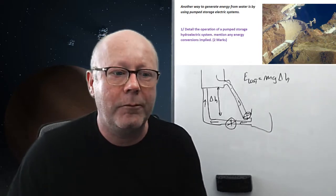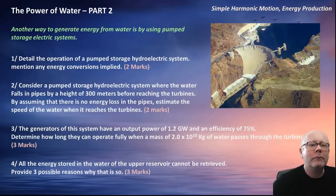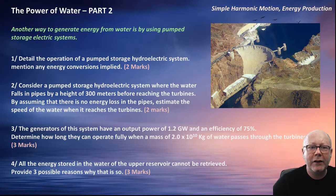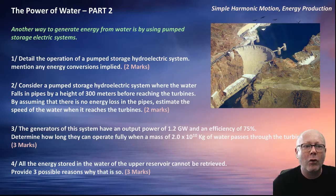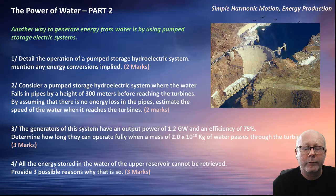Let's check out the next question. Consider a pumped storage hydroelectric system where the water falls in pipes by a height of 300 meters before reaching the turbines. By assuming that there are no energy loss in the pipes, estimate the speed of the water when it reaches a turbine. Pause the video, figure it out and come back.